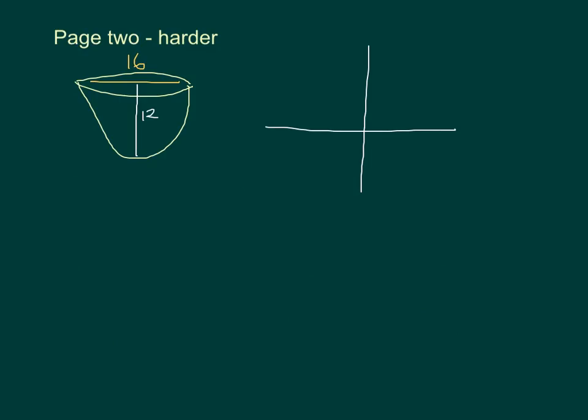All right, so page two is actually a little bit harder because we have to create our own equation, but it's really just plugging in numbers. This time we're given a searchlight with a parabolic reflector. The parabolic bowl is 16 inches wide, rim to rim, and 12 inches deep. We know the filament of the light bulb is located at the focus. We want the equation for the cross section of the parabola, and how far away we should place that filament from the vertex.